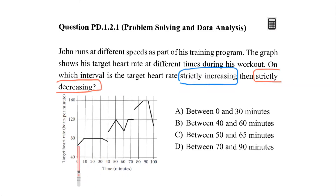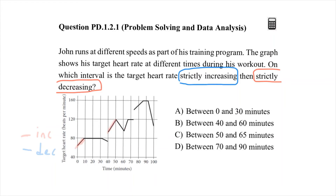Some lines are going up — for example, one starts around 60 to 70 beats per minute and increases to 80, so that is increasing. I'll use red for increasing lines. As you can see, the red lines are increasing. For decreasing lines, I'll use blue — those segments go downward.